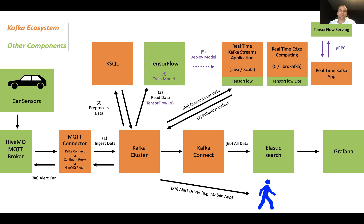The use case is a connected car infrastructure. We connect to 100,000 simulated cars which connect to an MQTT broker cluster of HiveMQ and then ingest the data in real time into Kafka. Here we do pre-processing — filtering, aggregations and so on — with KSQL. Then we ingest the data into TensorFlow. This is streaming ML with TensorFlow IO and its Kafka plugin. You can do machine learning from streaming Kafka data without the need of another data store like S3 or HDFS. You directly stream the data into TensorFlow to train a model for anomaly detection or predictive maintenance based on sensor data of the cars.